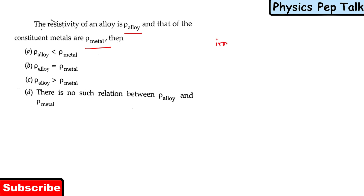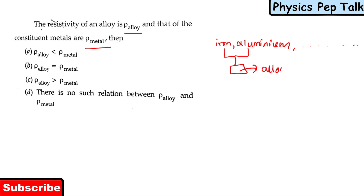Iron is a metal, aluminium is a metal — and so on. If I add more than one metal and cast a material, that material is called an alloy, and the original metals are called constituent metals. Always remember this important concept: the resistivity of an alloy will always be greater than that of the resistivity of the constituent metals.